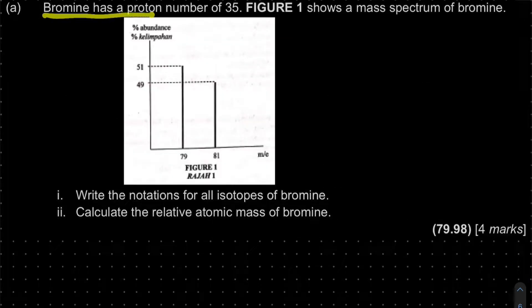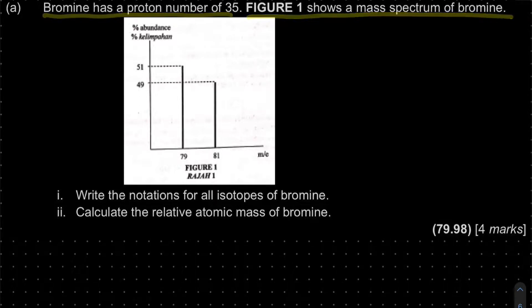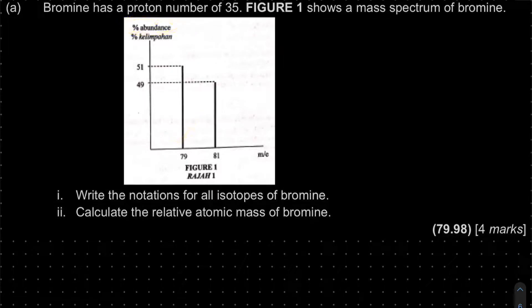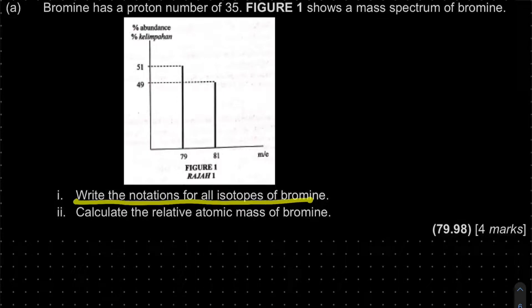Question 1A: bromine has a proton number of 35. Figure 1 shows a mass spectrum of bromine. The y-axis is percentage of abundance and the x-axis is m, which is our nucleon number or isotopic mass. The question asks: write the notation for all isotopes of bromine.